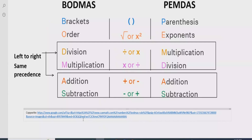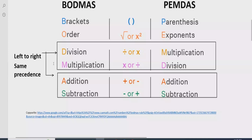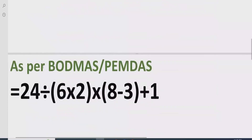Step three: go left to right in your expression and find division and multiplication. If division comes first, solve division first; if multiplication comes first, solve that first. Similarly, for step four — addition and subtraction — if addition comes first, solve addition first, and if subtraction comes first, solve subtraction first. These are the four steps to solve any arithmetic expression.